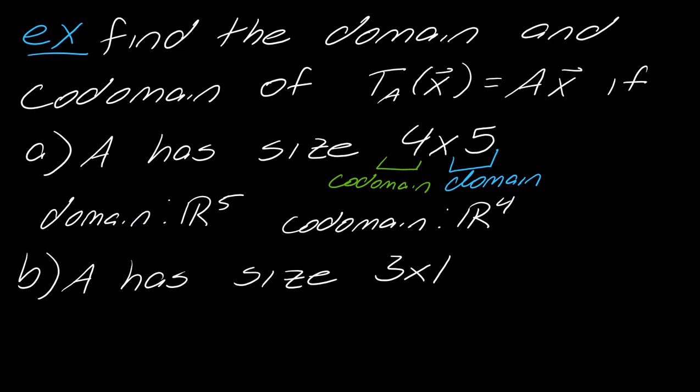So maybe you just want to pause and just replicate that just to make sure you've got it in your brain for this 3 by 1 matrix. You could pause here and then hit play. So in this case, my domain would just be R. So when it's R1, we just say R. We don't put the 1 there. And then the codomain would be R3.